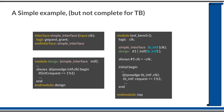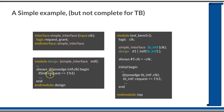In the design or RTL module, you can pass this interface as an argument. Instead of individually passing the request and grant signals, you just pass the interface name and its instance. So 'INDF' is of type 'simple_interface'. Once you have passed the interface as a port into the module, you can access the individual signals of the interface using the dot operator — for example, 'INDF.request == 1' or assigning 'INDF.grant = 1'. This is how you access individual signals within an interface.